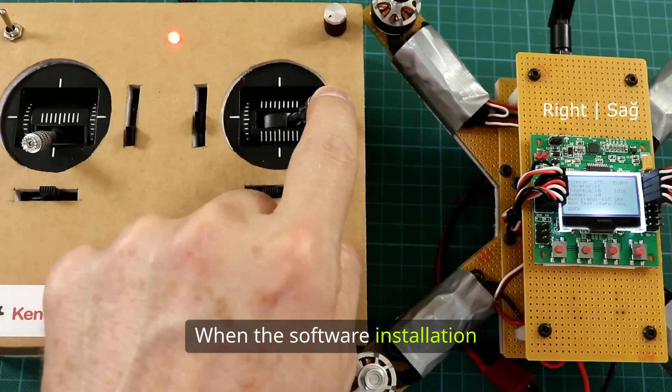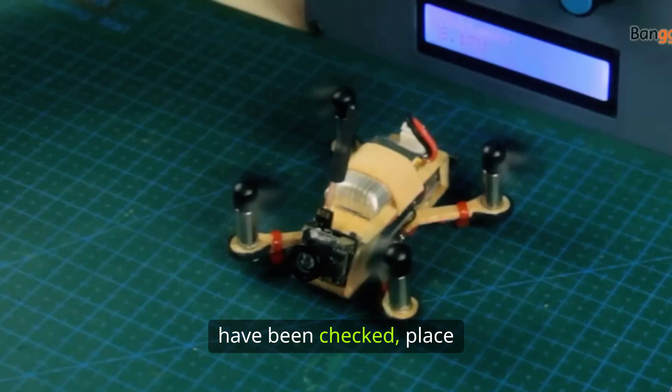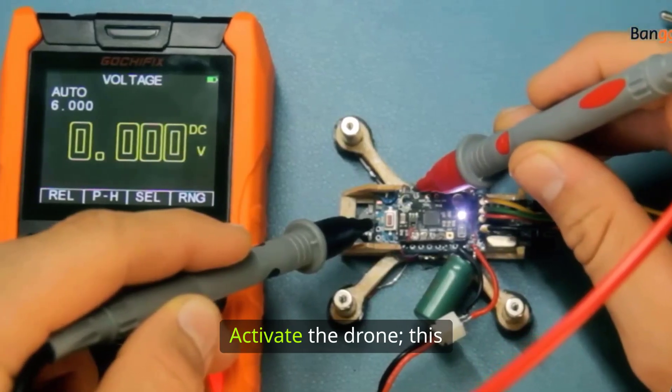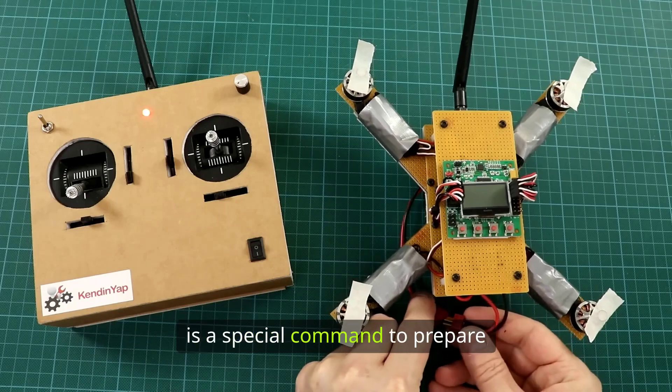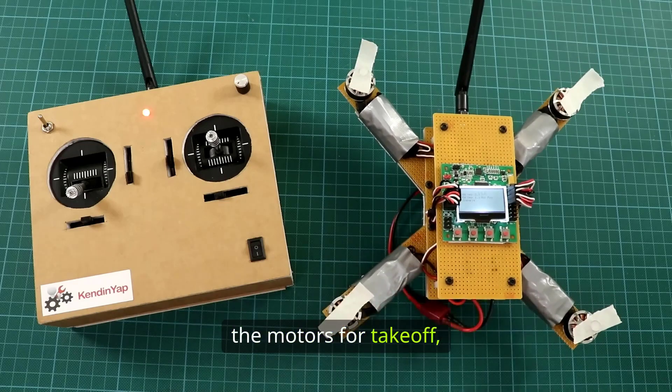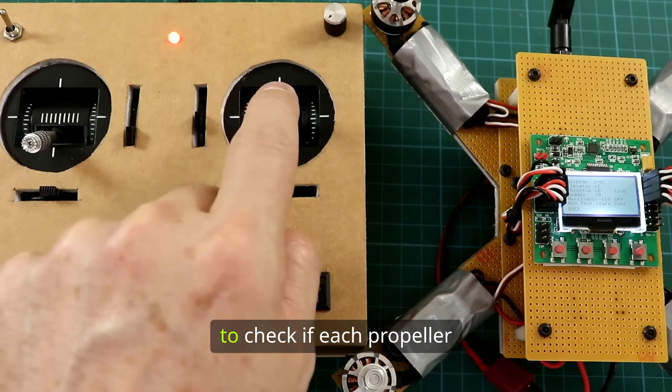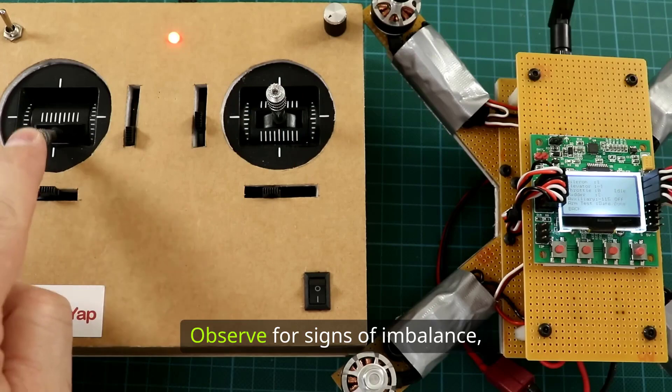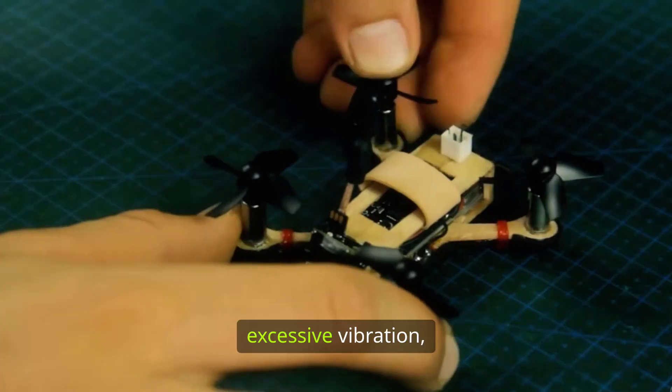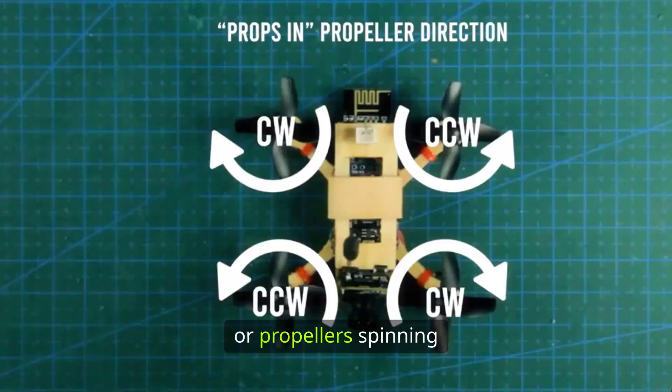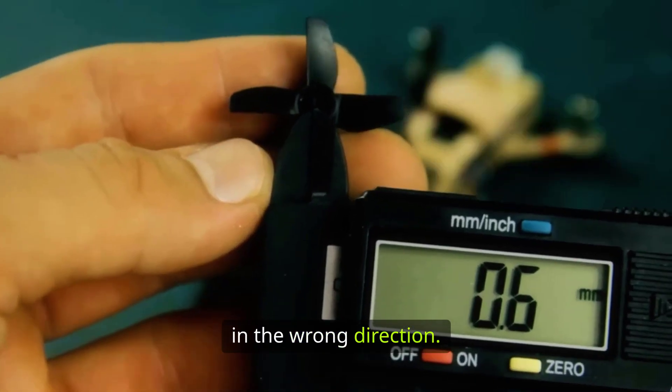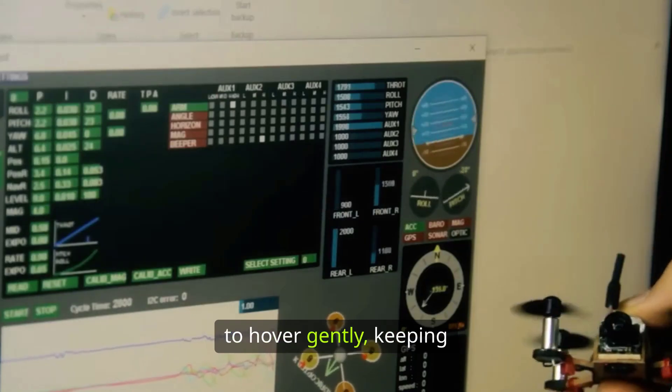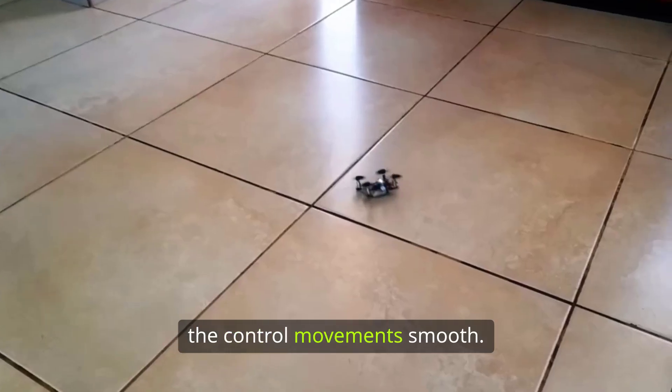When the software installation is complete and all connections have been checked, place your drone on a flat surface. Activate the drone. This is a special command to prepare the motors for take-off and gently increase the throttle to check if each propeller is spinning correctly. Observe for signs of imbalance, excessive vibration, or propellers spinning in the wrong direction. If all functions are working well, slowly lift the drone to hover gently, keeping the control movements smooth.